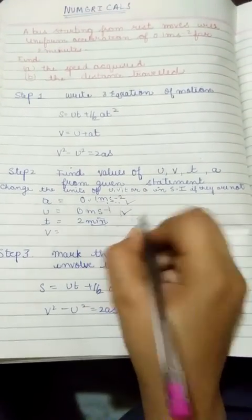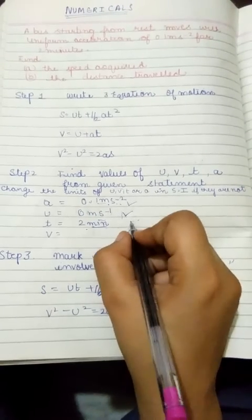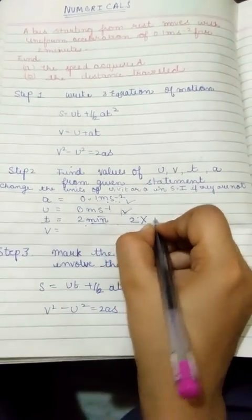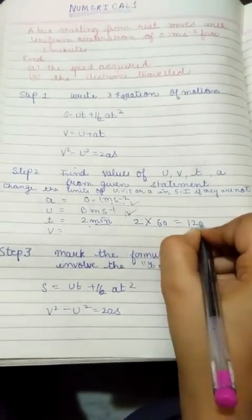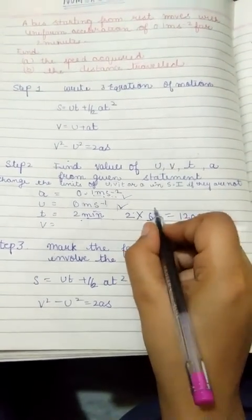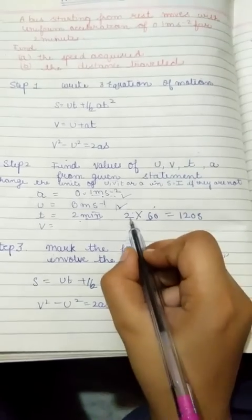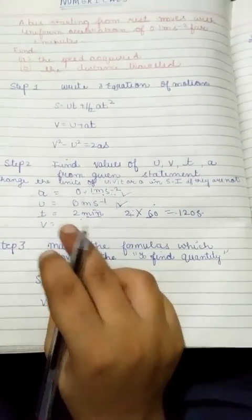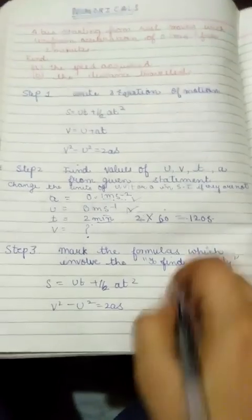Time ki jo SI unit hoti hai, wo second hoti hai. So hame is ko pehle minute se second mein convert karna padega. Multiply by 60 is equal to 120 second. 2 into 60 is equal to 120 second. We have to find v, so this is unavailable in the statement.